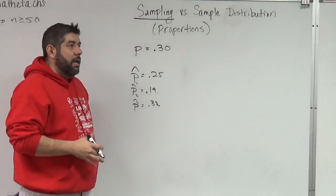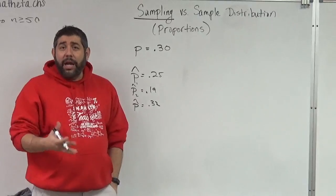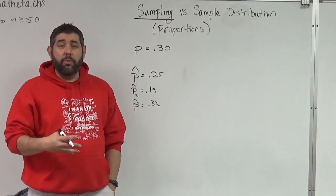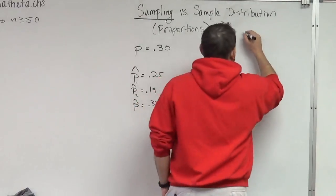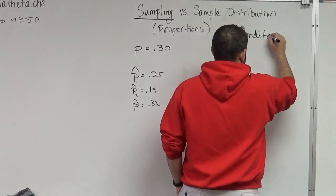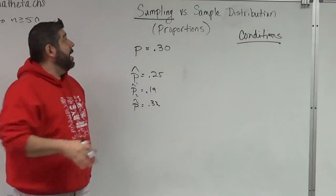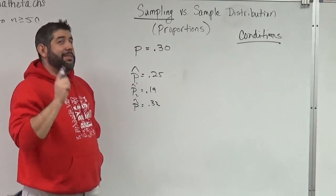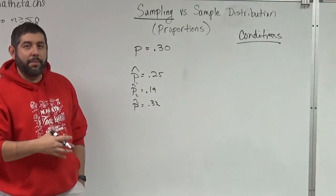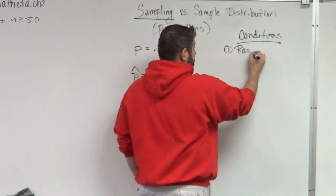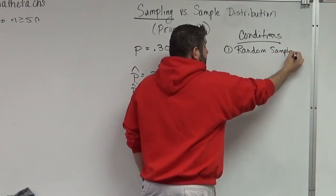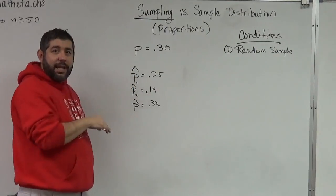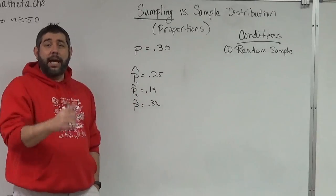Let me show you what happens. First, each of those samples — we want to make sure we do it right. So what are some things we need to make sure we do when we gather a sample? I'm going to call these the conditions — my conditions for having a sampling distribution. My first condition: I need to make sure that my sample is taken correctly with very limited bias. So the first thing I'm going to do is randomize. Each of these P-hats that I get, each of these sample proportions, are taken from samples that were randomly selected.